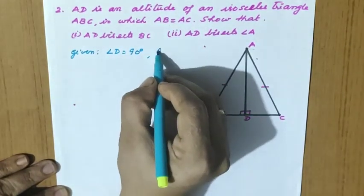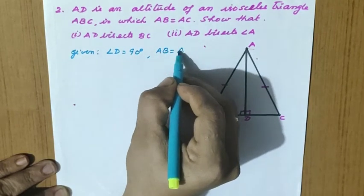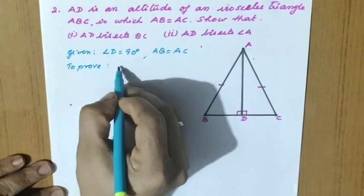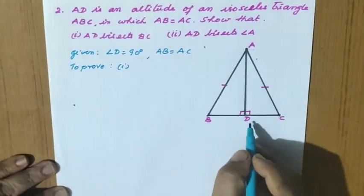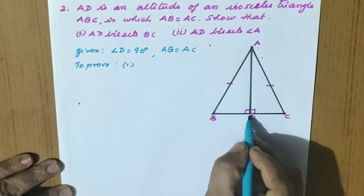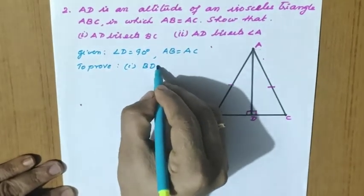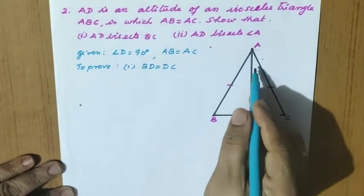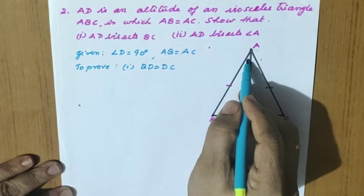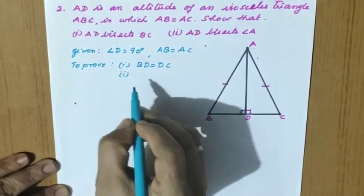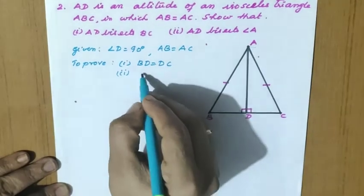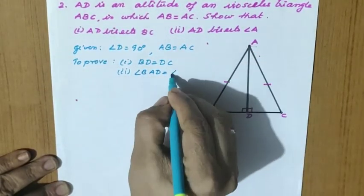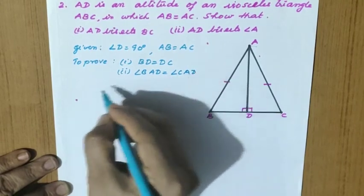There are two parts to prove. First, AD bisects BC — meaning we should get BD equal to DC. Second, AD bisects angle A — meaning these two angles are equal, so angle BAD equal to angle CAD. These are to be proved.